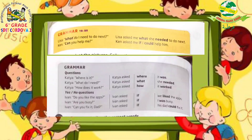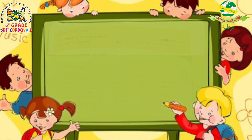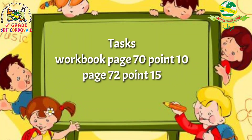The third yes/no example: 'Can you fix it, Dad?' — this is clearly addressed to his father. So: 'Ivan asked if his dad could fix it.' Ivan is asking his father whether his father can fix it. So, the key rule is: change all to-be, verbs, and auxiliary verbs to their past form (second form), and also pay attention to changes in subject and object.